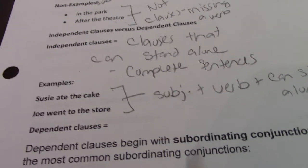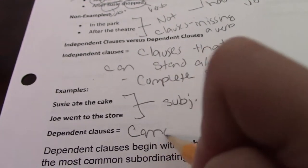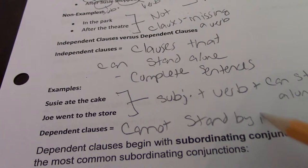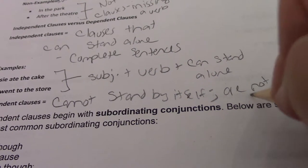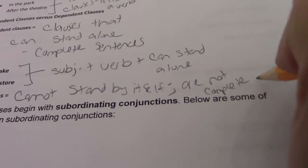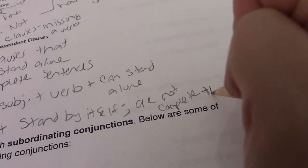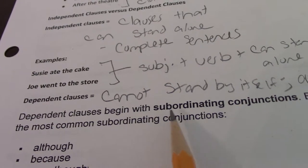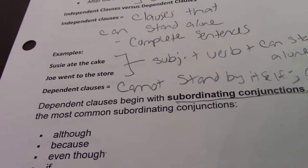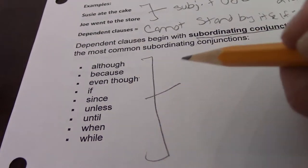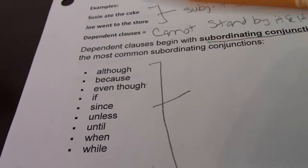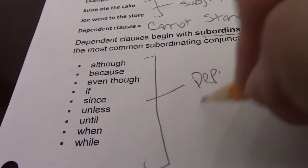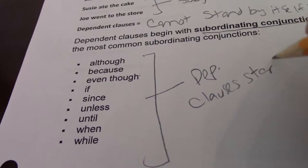On the other hand, dependent clauses cannot stand by themselves and are not complete thoughts. Dependent clauses begin with subordinating conjunctions — a dependent clause will always start with a subordinating conjunction. This is a list of common subordinating conjunctions, and if you have a dependent clause, it will most likely start with one of these.